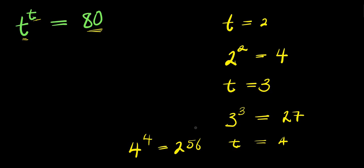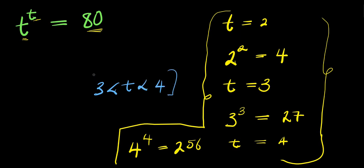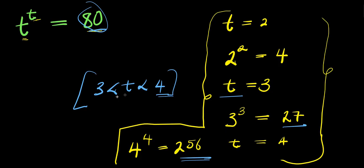So right now, we can use this to get the range of values of t. We can conclude that the range of values of t is 3 is less than t, while t is less than 4. How did I get this? Because when t is 3, I'm getting 27, and 27 is less than 80. When t is 4, I'm getting 256, and 256 is greater than 80. So the range of values is between 3 and 4, but it's less than 4.